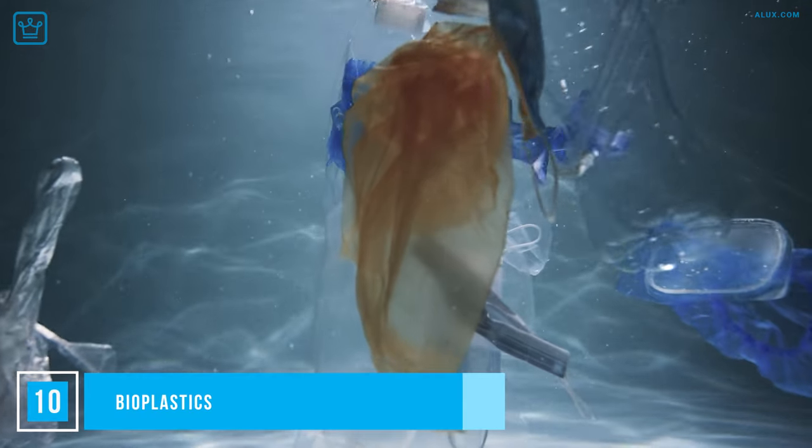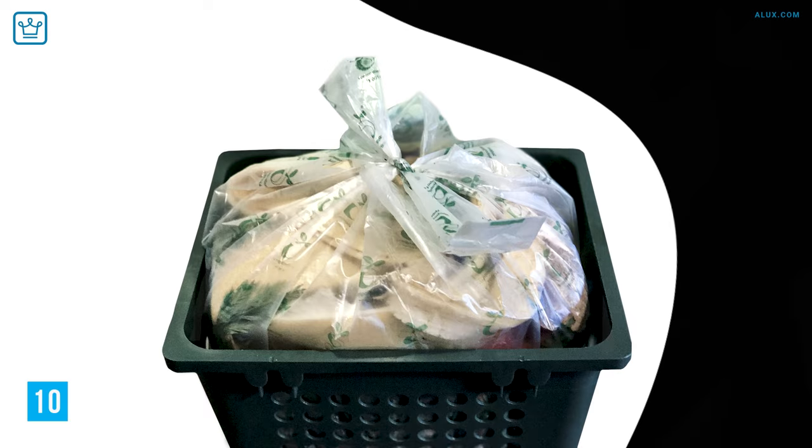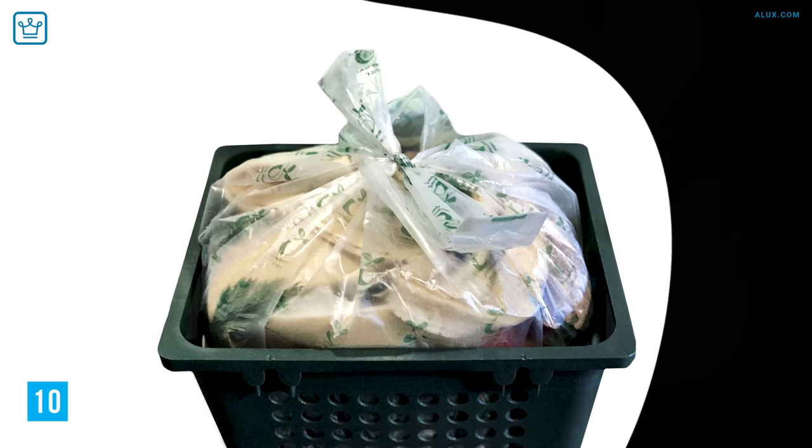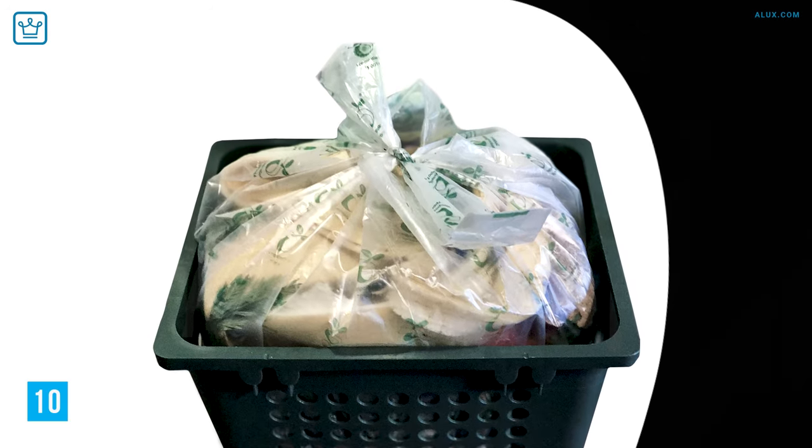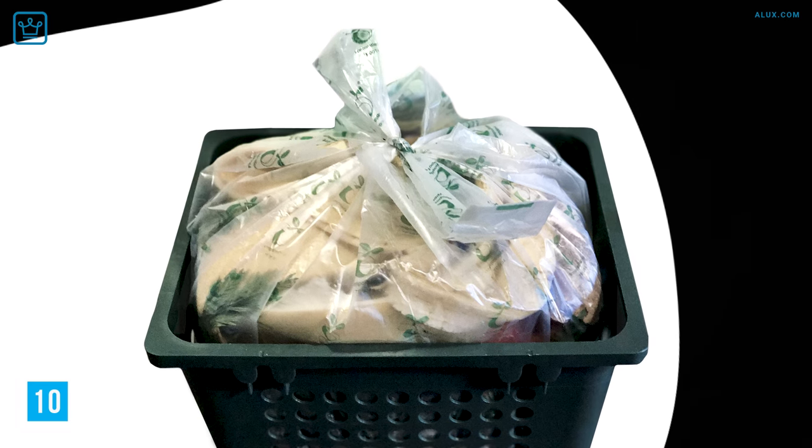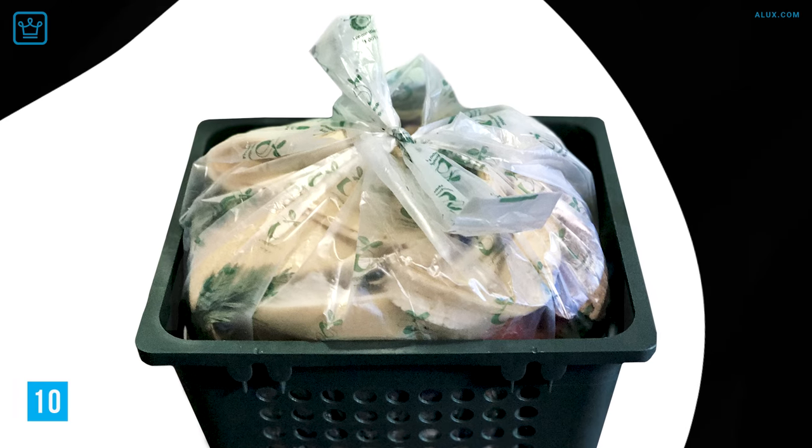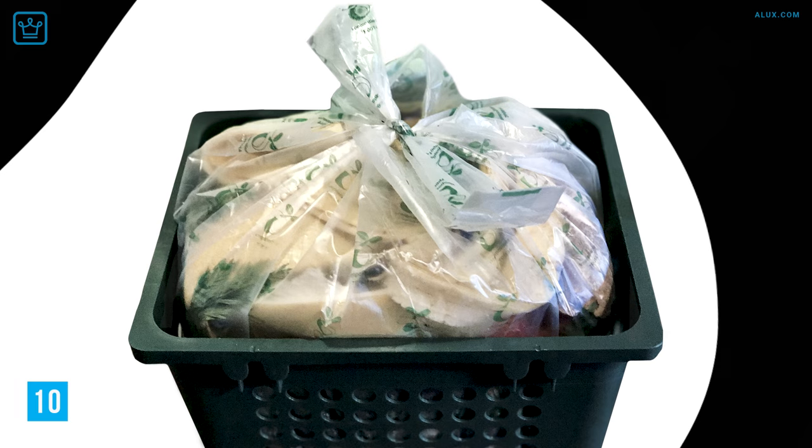Number 10. Bioplastics. Finally, biotech could help us kick the habit of dumping traditional chemical plastics into the ocean through the manufacturing of bioplastics. Biotech is behind the top two methods of getting plastics from plants. First, fermentation – using bioengineered microorganisms. And second, bioengineering plant varieties that can actually produce natural plastics as part of the photosynthesis process.